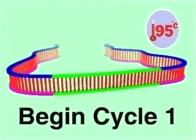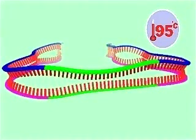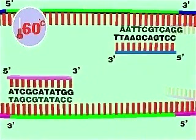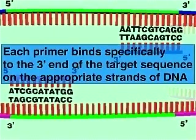In the first cycle of PCR, the DNA molecules are melted by raising the temperature to 95 degrees. After the strands have separated, the temperature is lowered to 60 degrees so that a pair of short oligonucleotide primers, specific for the three prime ends of the target sequence, can bind one primer on each strand.